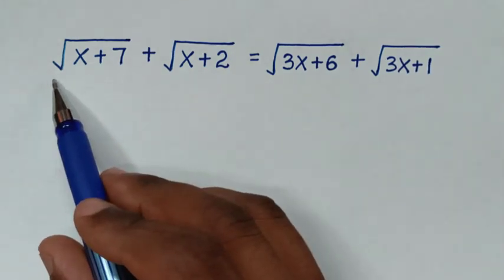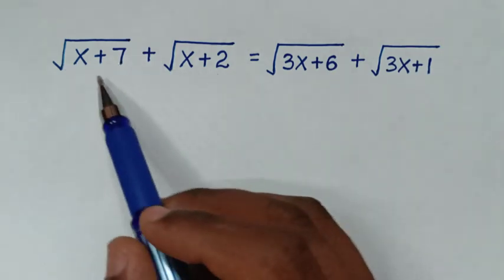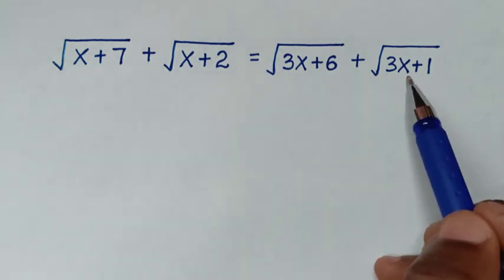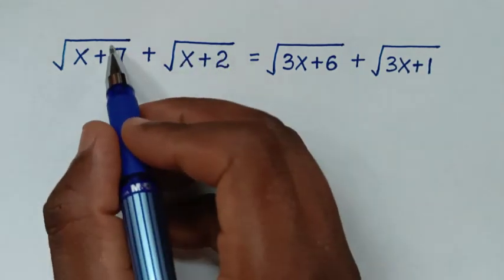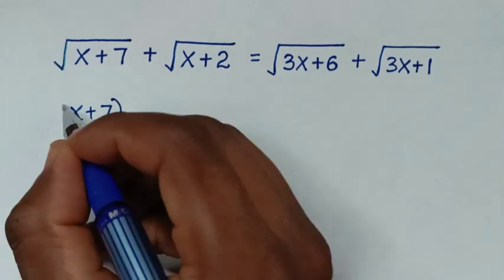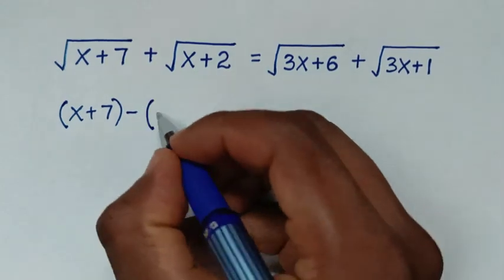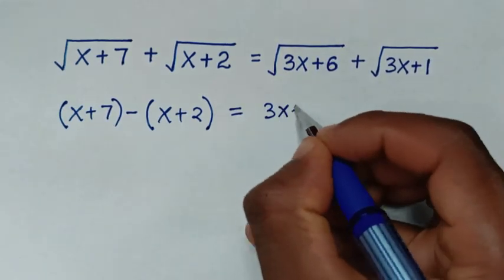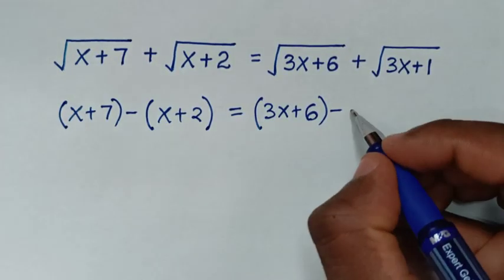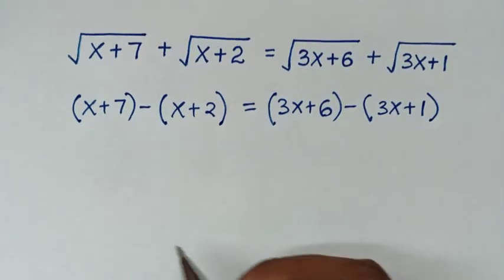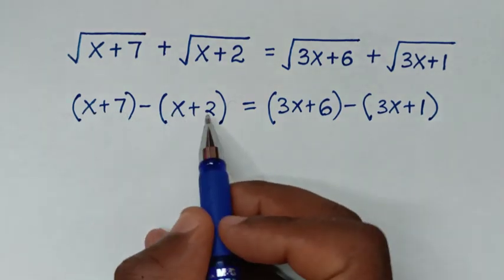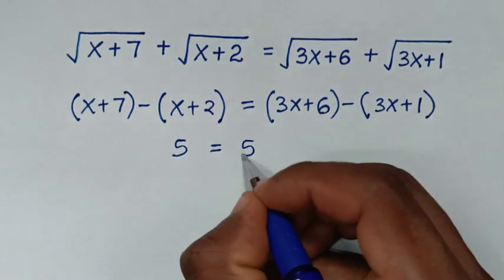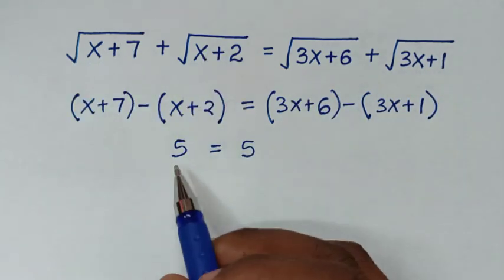On the left side, the expressions inside the square roots have x and x. On the right side, the expressions inside the square roots have 3x and 3x. Now we take the difference: (x+7) minus (x+2) equals 7 minus 2, which is 5. And (3x+6) minus (3x+1) equals 6 minus 1, which is also 5. So the difference between the expressions inside the square roots is the same — both equal 5.